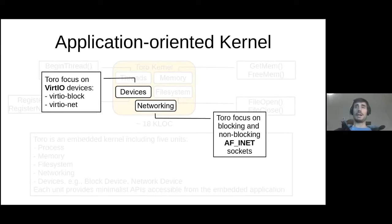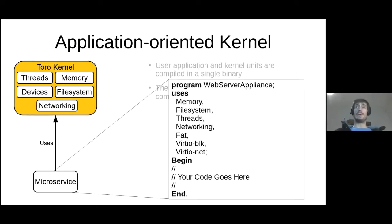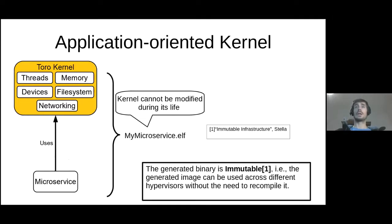To get better performance on KVM, Toro focuses on VirtIO devices, and the networking supports both blocking and non-blocking socket interfaces. In Toro, the user application and the kernel compile together, and the user application has to explicitly define what components must be included using the keyword 'use'. The resulting ELF binary contains both the kernel and the application. This binary is immutable in the sense that you can use the same binary in different hypervisors without modifying it, which simplifies the maintenance of the microservice.